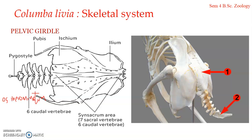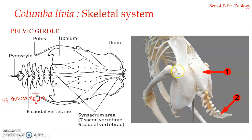The inner margin of the ilium is fused with the transverse processes and neural spines of the synsacrum. The outer surface of its anterior part is concave, and the posterior part is fused with the ischium. The ilium forms the dorsal part of the acetabulum. On the outer surface above the acetabulum there is a projection known as the antitrochanter, which articulates with the greater trochanter of the femur.